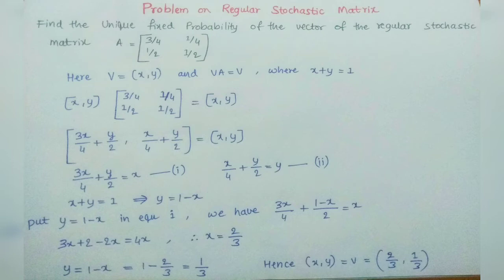First element equals first element. It can be written as 3x/4 plus y/2 equals x, which is equation 1. x/4 plus y/2 equals y, which is equation 2.